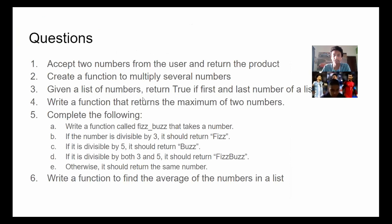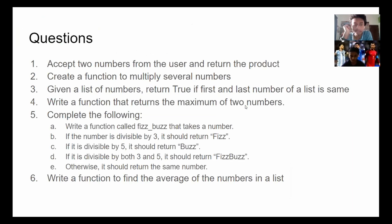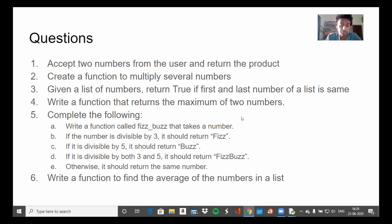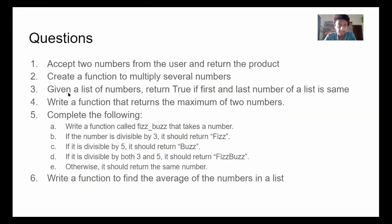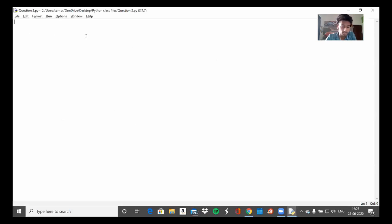Here is the next question. This one shouldn't be too difficult. In this question, assume that you do not know how many numbers will be in the list. I'll give you the list at the end and you'll have to use whatever code you have. Now I'm going to go over question three. Given a list of numbers, return true if the first and last number of the list are the same. Say we have a list called `numbers`.